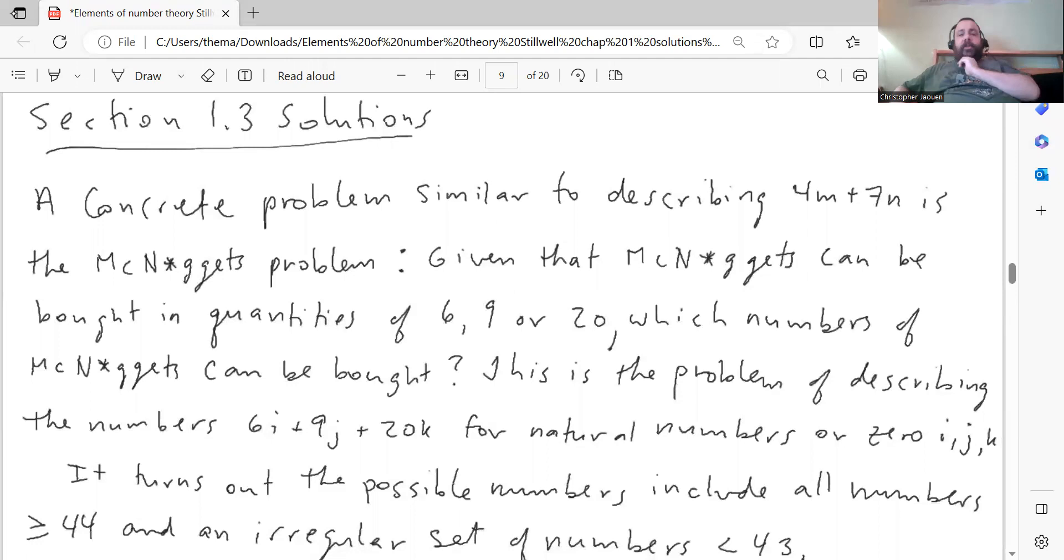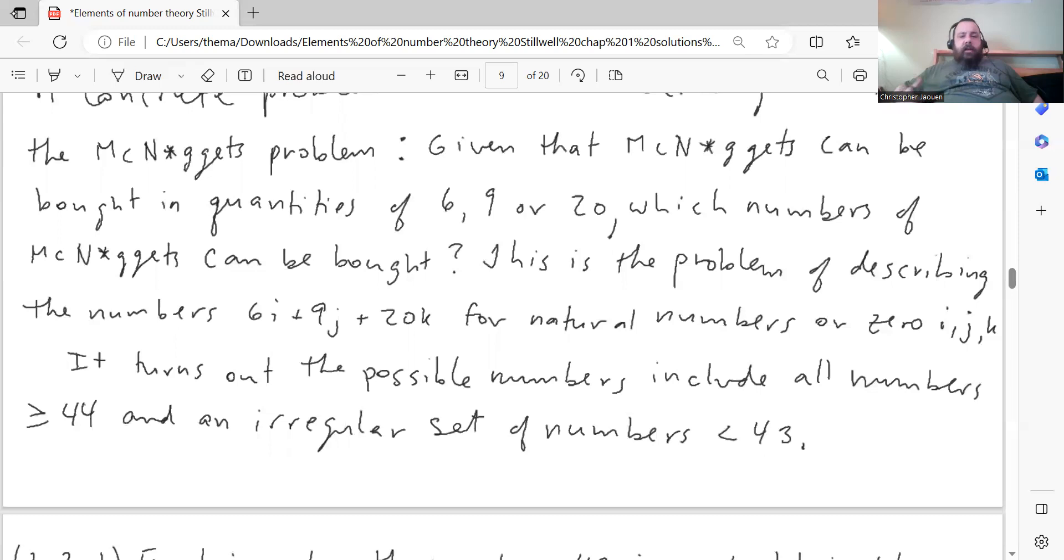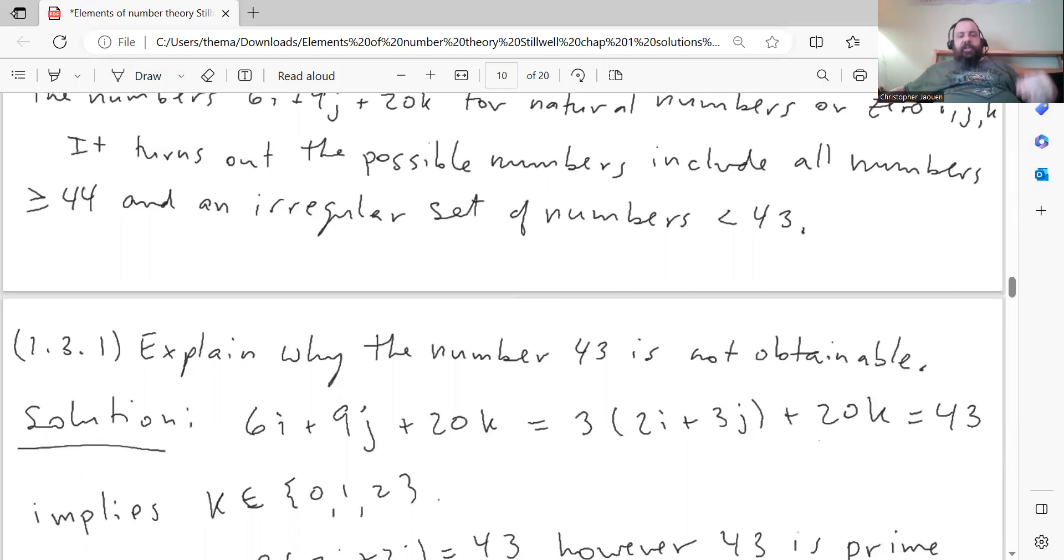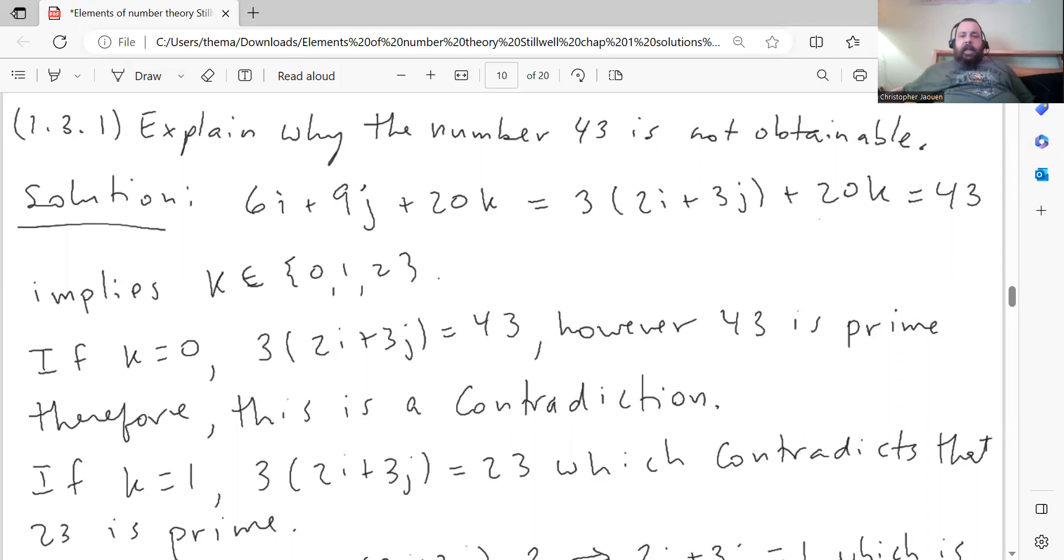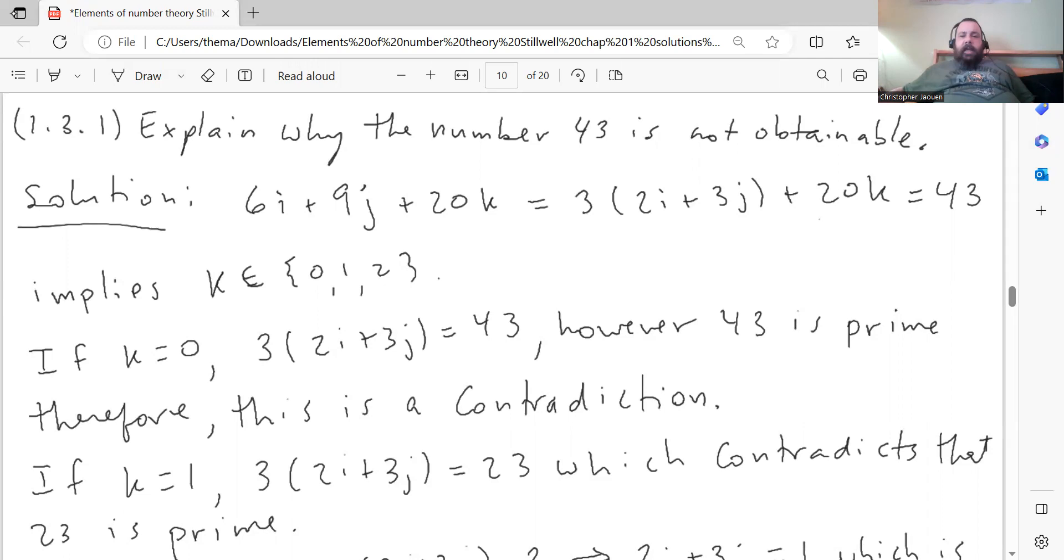Next section 1.3. A concrete problem similar to describing 4m plus 7n is what he calls the McNuggets problem. Given that McNuggets can be bought in quantities of 6, 9, or 20, which numbers of McNuggets can be bought? This is the problem describing the numbers 6i plus 9j plus 20k for natural numbers. It turns out that the possible numbers include all numbers greater than or equal to 44, and some irregular set of numbers less than 43.